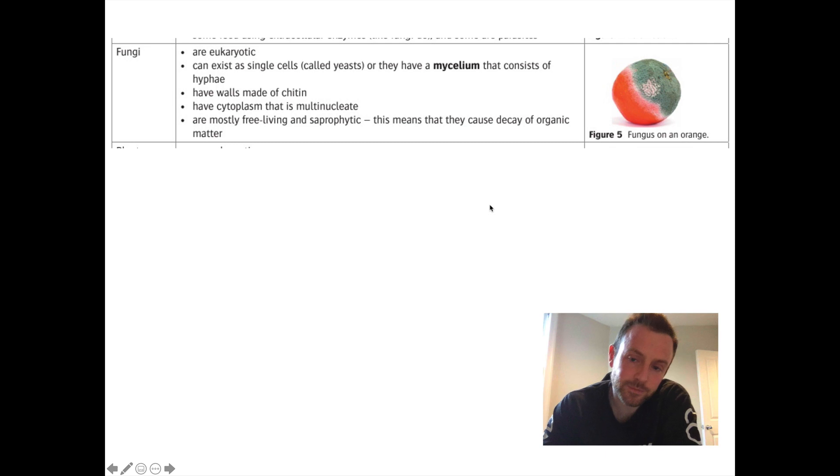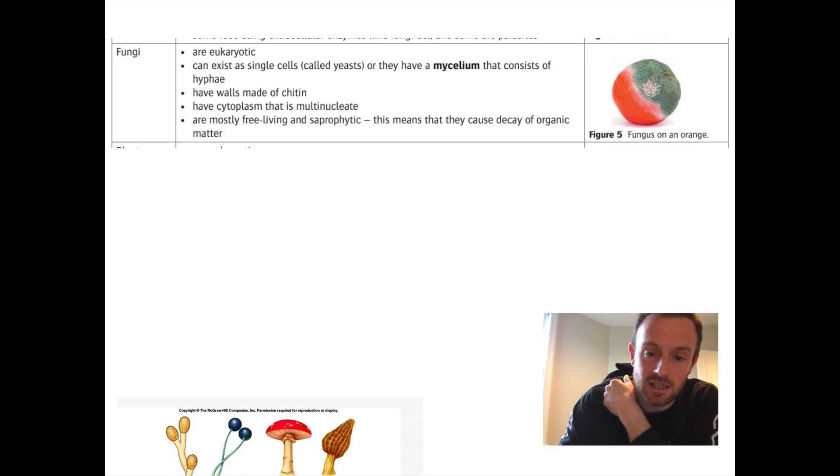Okay, fungi. So fungi, first of all, it's worth saying that they used to be grouped in with plants because they kind of grow through the soil. But there's key differences. First of all, they have a cell wall, but it's made of chitin and not cellulose. And they are eukaryotes, but they don't have chlorophyll, so they don't make their own food. So they are mainly heterotrophic, but they get their nutrients by causing the decay of organic matter.